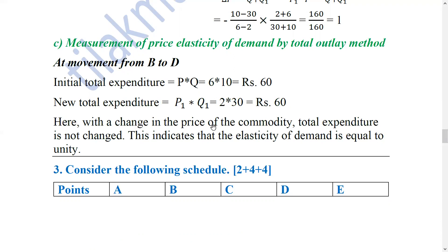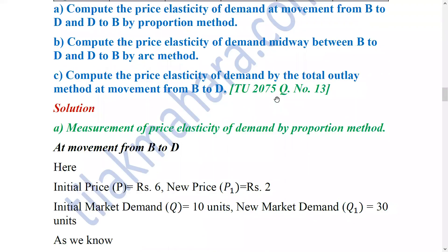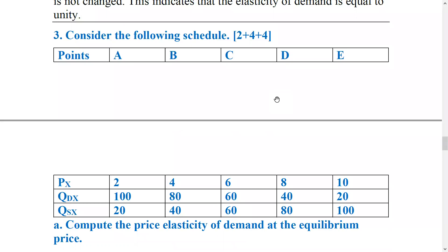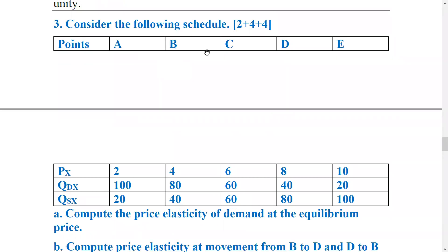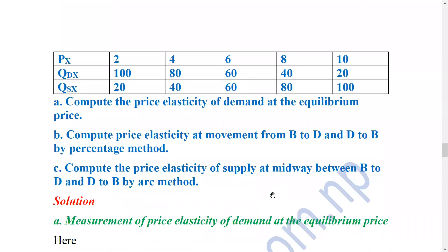Here is question number two, which was asked in 2075 for 10 marks. Now we have a 2076 question worth 10 marks, 2 plus 4 plus 4. The table has points A, B, C, D, E with price of good X: 2, 4, 6, 8, 10; quantity demanded: 180, 80, 60, 40, 20; and quantity supplied: 20, 40, 60, 80, and more. Sub-question A: compute price elasticity of demand at equilibrium price.